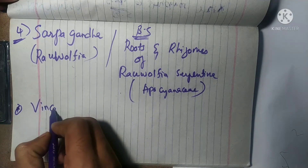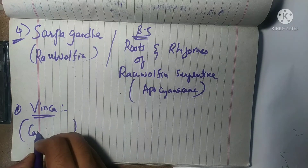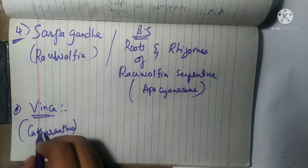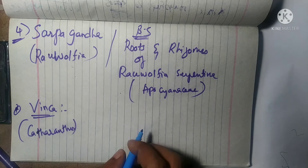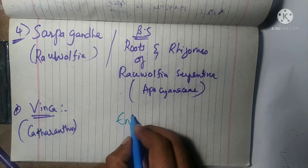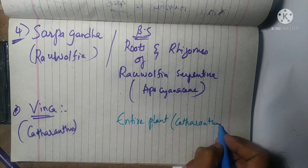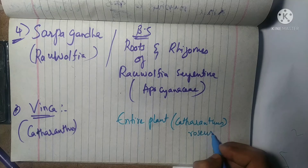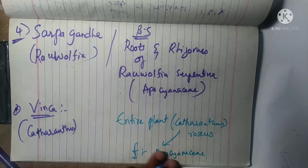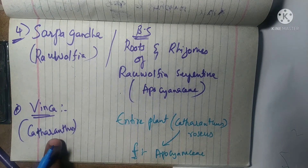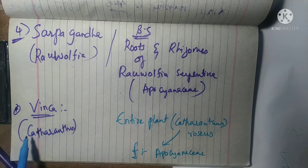Next coming to Vinca — Vinca rosea. Its synonym includes Catharanthus and its biological source is the entire plant of Catharanthus roseus, which belongs to the family Apocynaceae. Here the entire plant is used. So Vinca is obtained from the entire plant of Catharanthus roseus, which belongs to the family Apocynaceae, and its synonym includes Catharanthus.